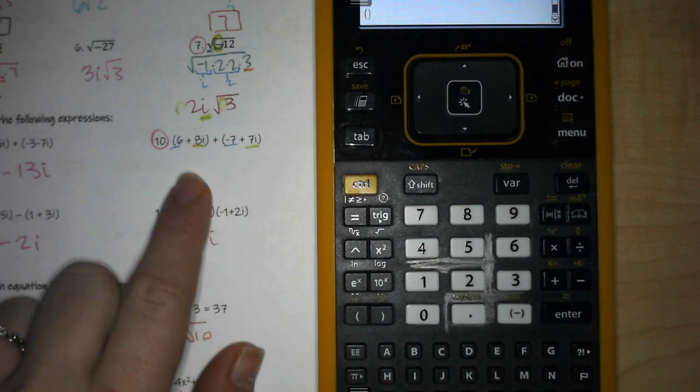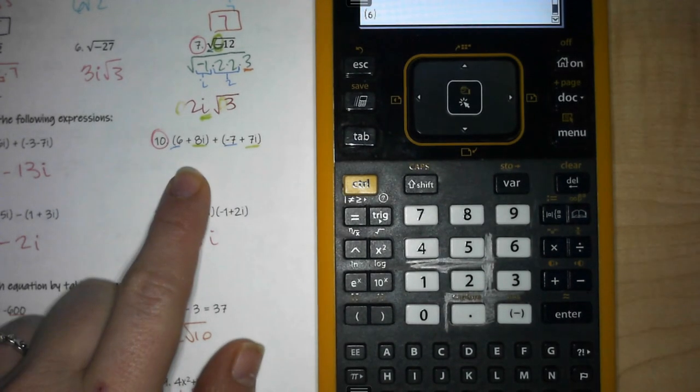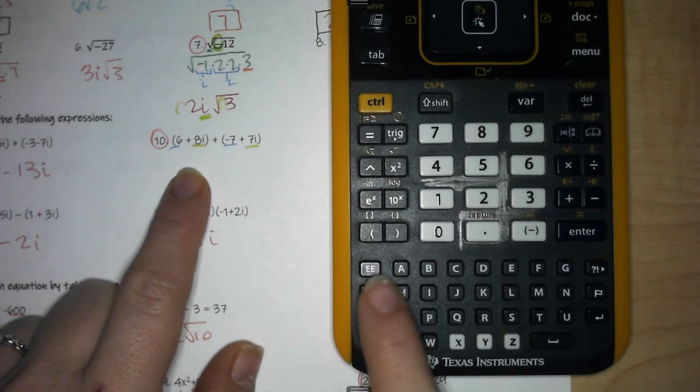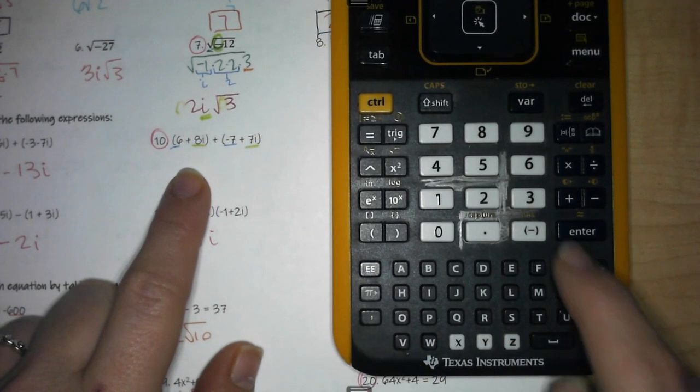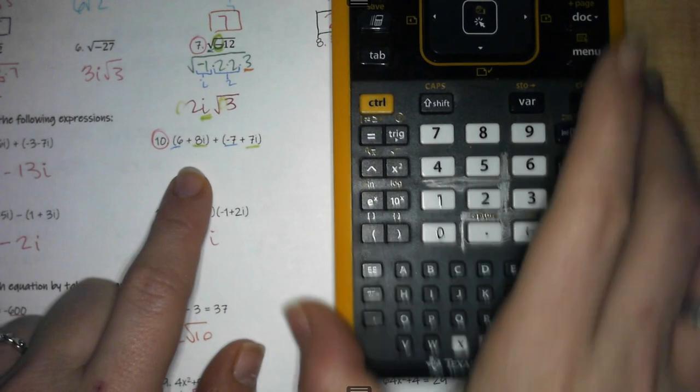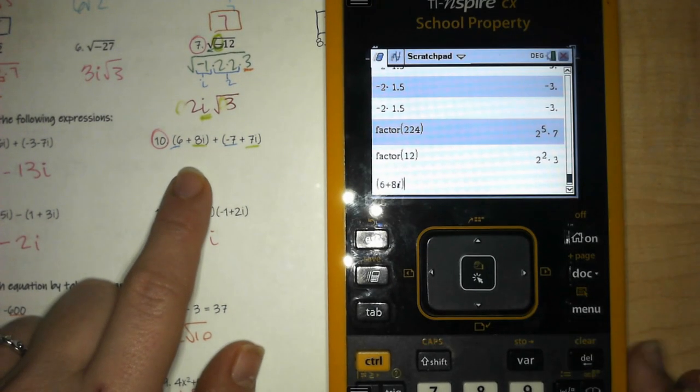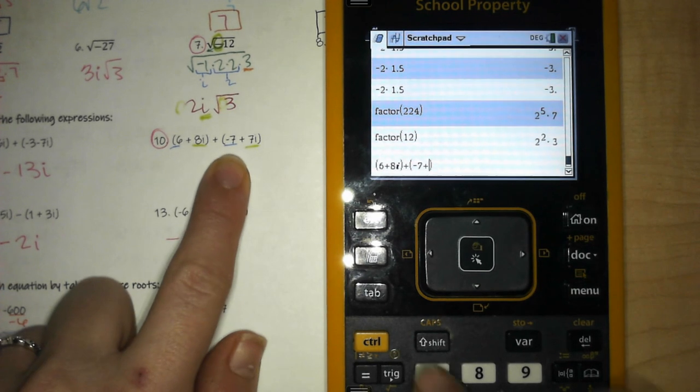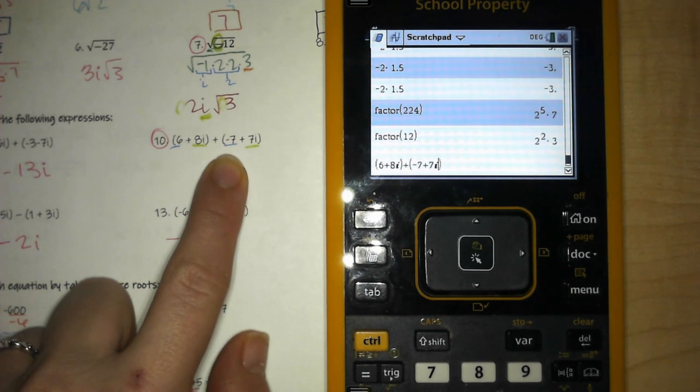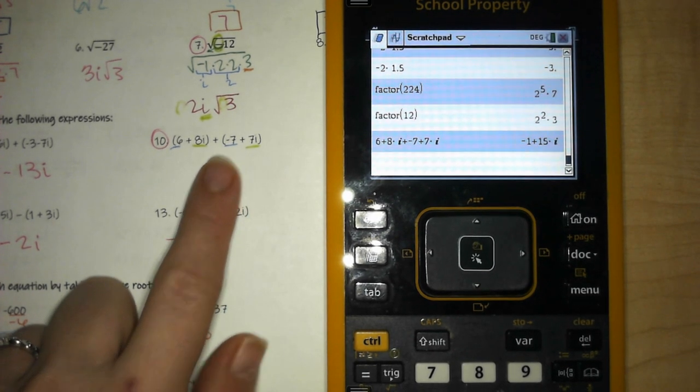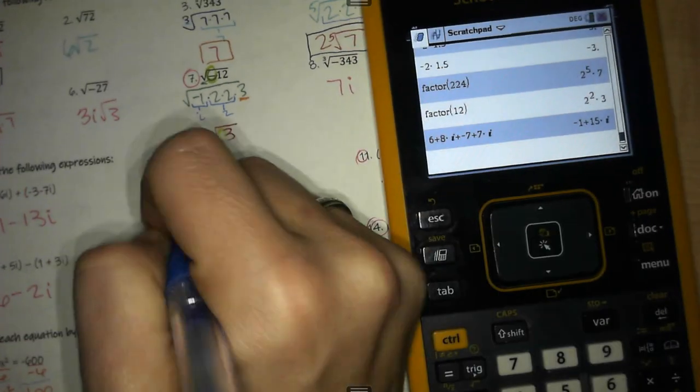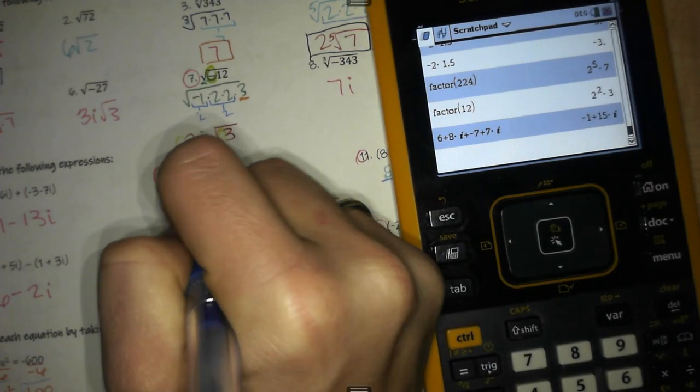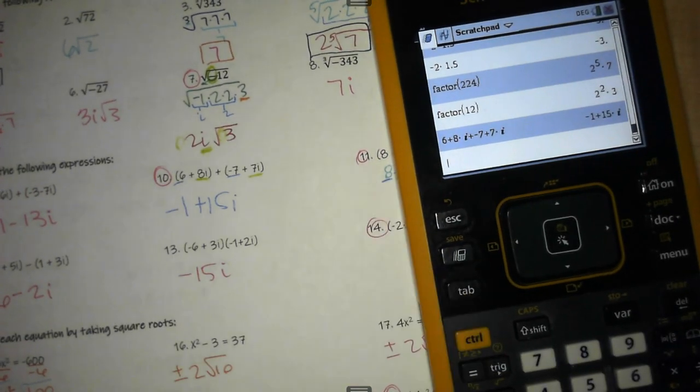Okay, so I am entering this exactly as I see it with the parentheses, 8i. Remember your i is your pi button. If you press that twice and hit enter, that gives you i as you can see. All right, plus parentheses, entering it in exactly as I see it here, i. And that gives me negative 1 plus 15i, and that is my answer.